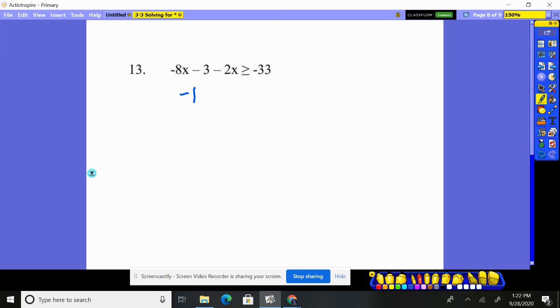Number 13. Well, we put together I have -11x - 3 ≥ -33. Move my number over. I don't know where my brain went, but -8x with -2x is -10x. I knew something looked a little weird.